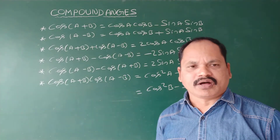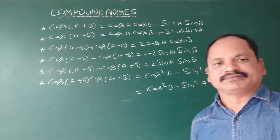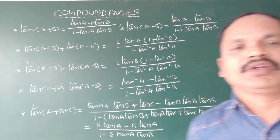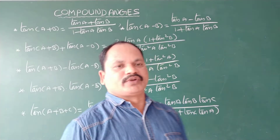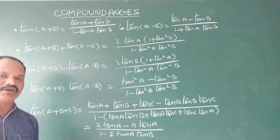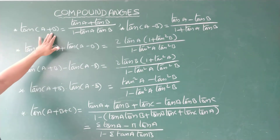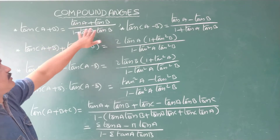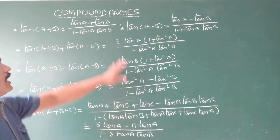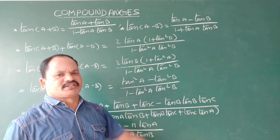Now we are going to the formulae in terms of tan. Tan A plus B is tan A plus tan B by 1 minus tan A tan B. And tan A minus B is tan A minus tan B by 1 plus tan A tan B.